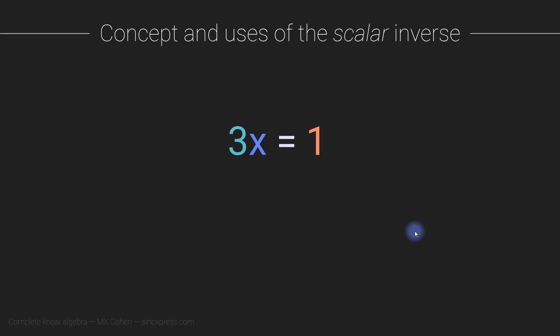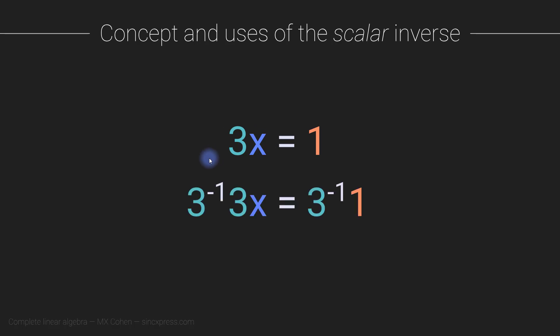By way of introduction, I would like to first tell you about the scalar inverse. The scalar inverse is something you already know about, but you might not use this name. Here's a simple equation — the goal is to solve for X. You might think to divide both sides by 3, but I want to explain that procedure differently: multiply both sides by the inverse of 3, which can also be written as 3 to the power of minus 1.